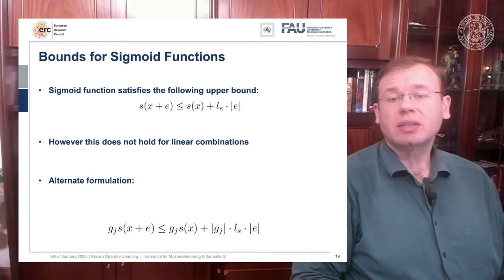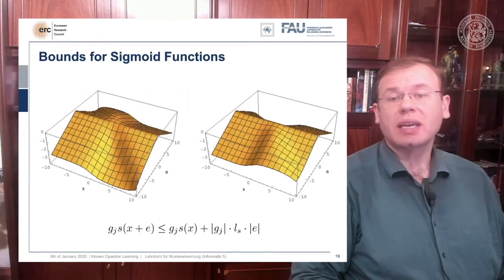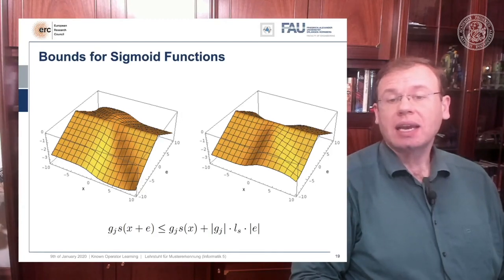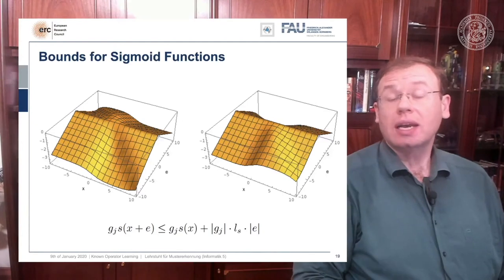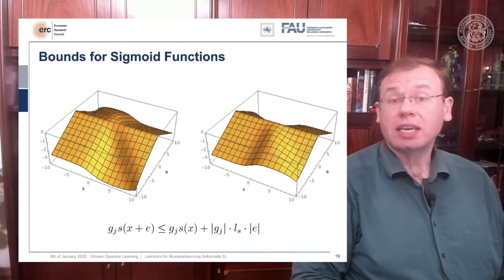subtracted them and moved them to the left hand side, which means that all of these terms need to be in combination lower than zero. And if you do that for positive and negative gj, you can see in the two plots that independent of the choice of e and x I'm always below zero.